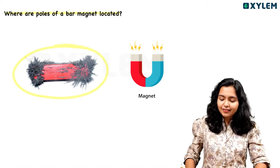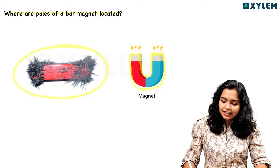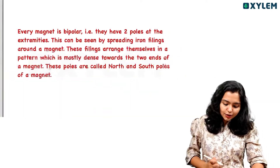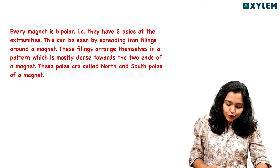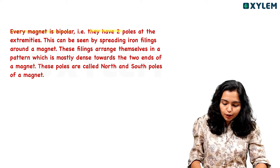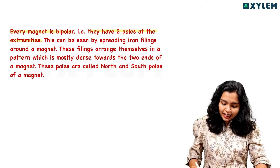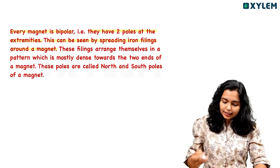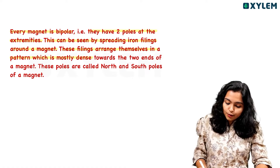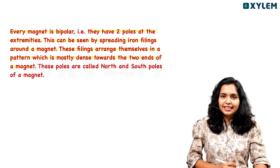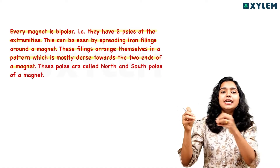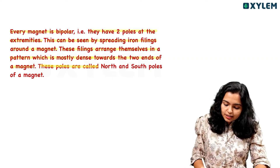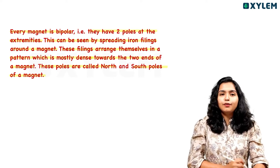This iron filling is very dense near the poles. We consider that the pole here is where the strength is greatest. These poles are called the South Pole and North Pole of a magnet. A magnet is bipolar — it has two poles at its extreme ends. This can be seen by spreading iron filings around a magnet.